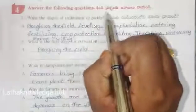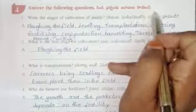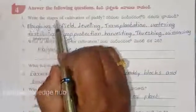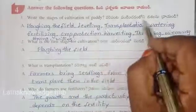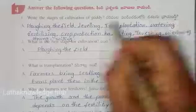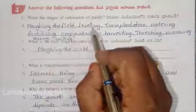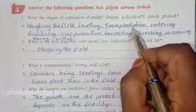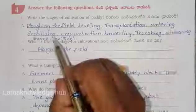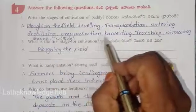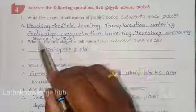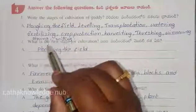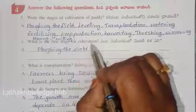Answer the following questions. Write the stages of cultivation of paddy: ploughing the field, leveling, transplantation, watering, fertilizing, crop protection, harvesting, threshing, winnowing, storing, and milling.